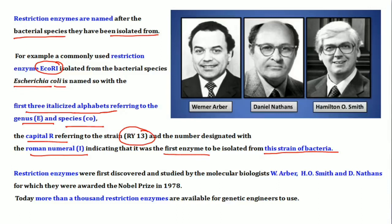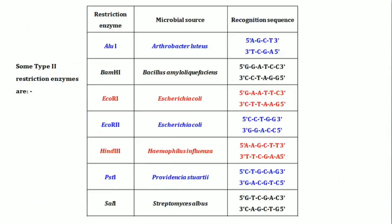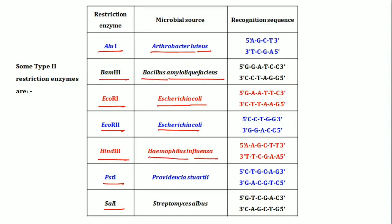Restriction enzymes were first discovered by molecular biologists Werner Arber, Hamilton Smith, and Daniel Nathans, who received the 1978 Nobel Prize. Today, more than thousands of restriction enzymes are available for genetic engineers to use. Common examples include: LuI from Arthrobacter luteus, BamHI from Bacillus amyloliquefaciens, EcoRI and EcoRII from Escherichia coli, HindIII from Haemophilus influenzae, PstI from Providencia stuartii, and SalI from Streptomyces albus.